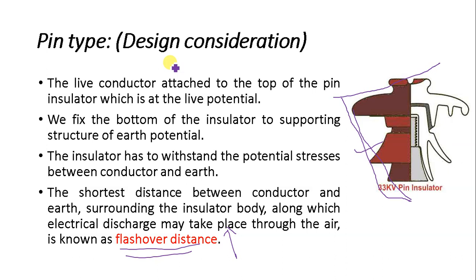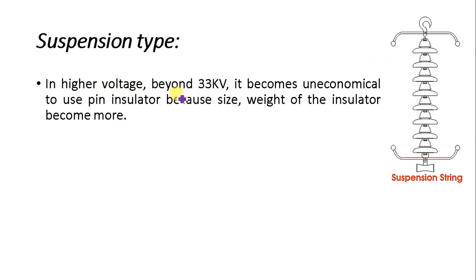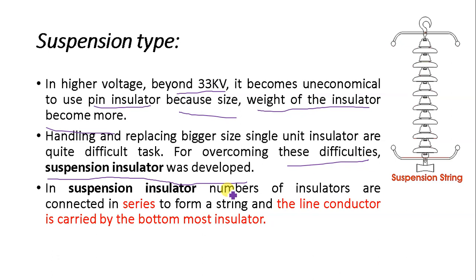Now let us discuss the suspension type insulator. For voltages beyond 33 kV it is uneconomical to use pin type insulators because the size and weight become large, making handling and replacement difficult. To overcome these difficulties, suspension type insulators were developed. In a suspension type insulator, a number of insulator discs are connected in series to form a string.